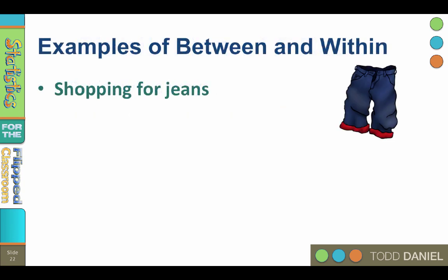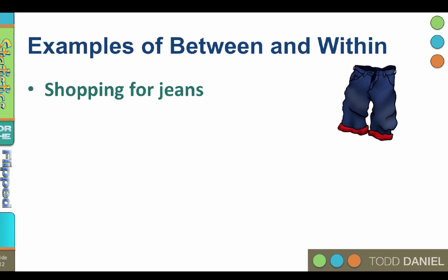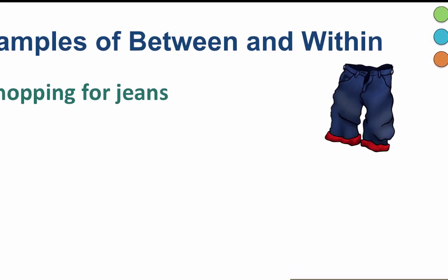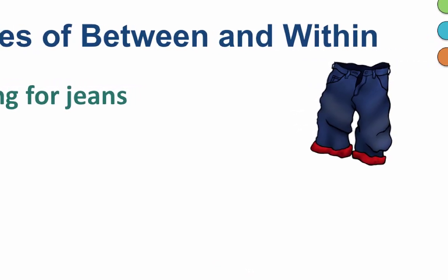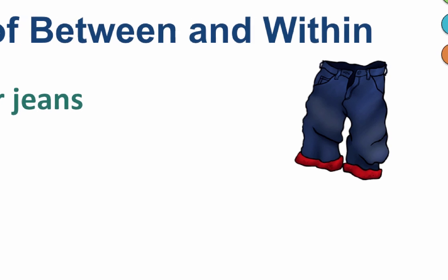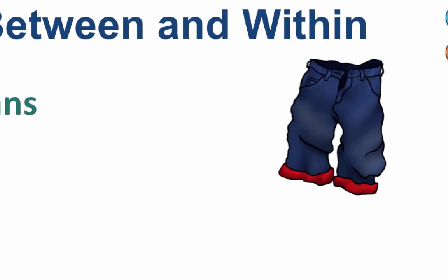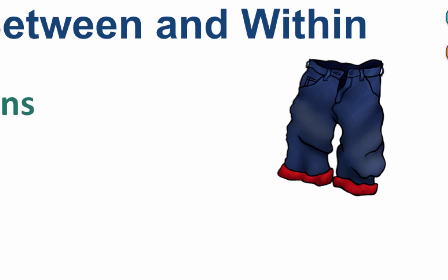Here are some examples of variance between and within. Shopping for jeans: the price of jeans varies between stores, but also within a single store. Certain stores are more expensive and others are less expensive — that's variance between the stores. But within any given store, the price of jeans will differ for different pairs. That's variance within.